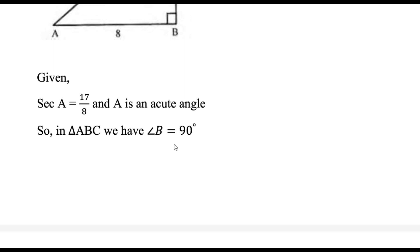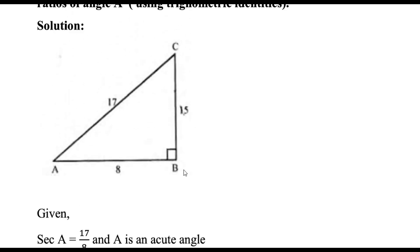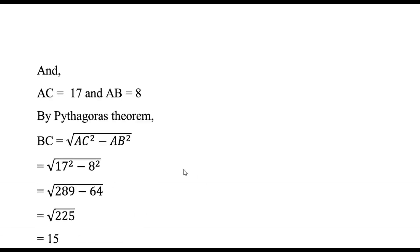In triangle ABC, angle B is 90 degrees. It is clear from the picture. AC, the hypotenuse, is 17 and AB, the base, is 8.